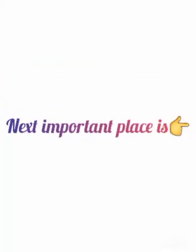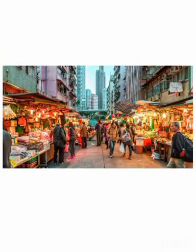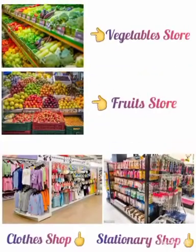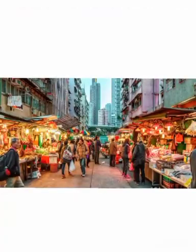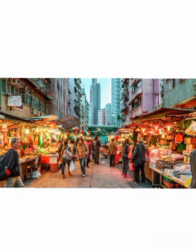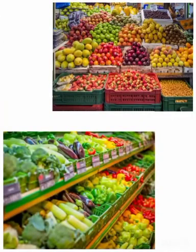The next important place is market. A market is a crowded and busy place with many shops, as you can see in this picture. When you go to the market, you will see many people buying different things. We buy things of our daily use from the market.